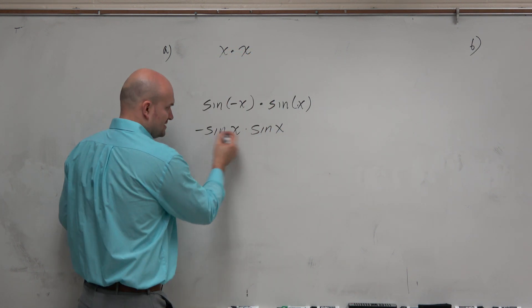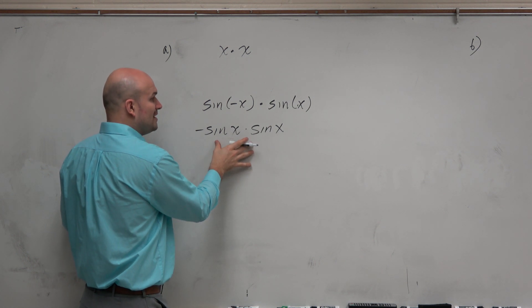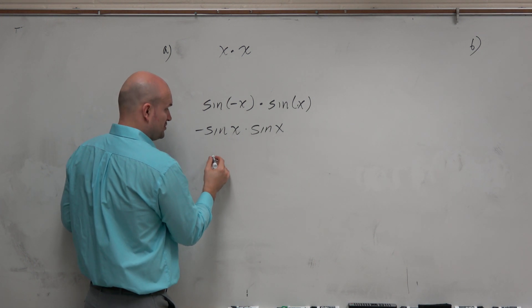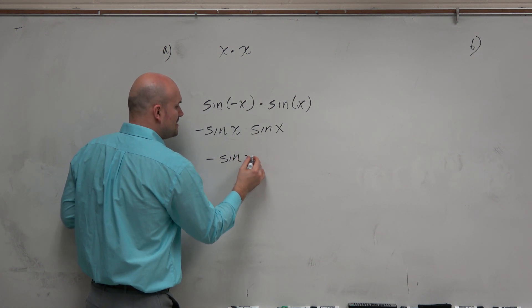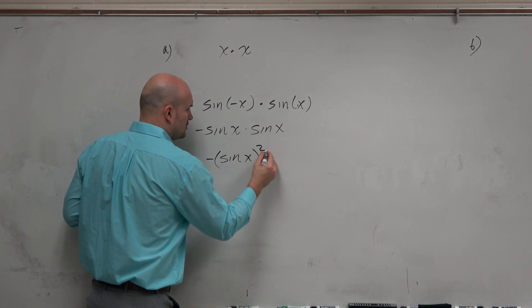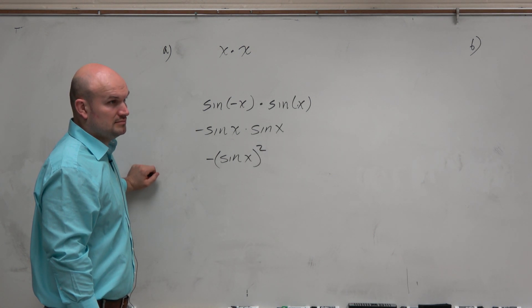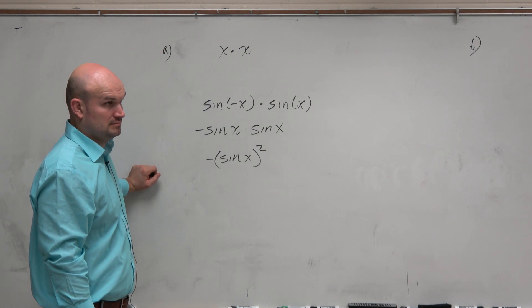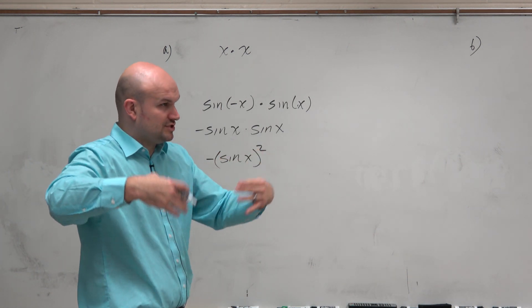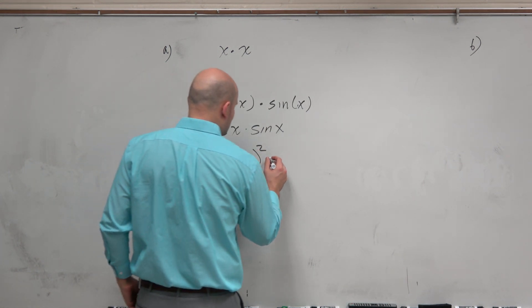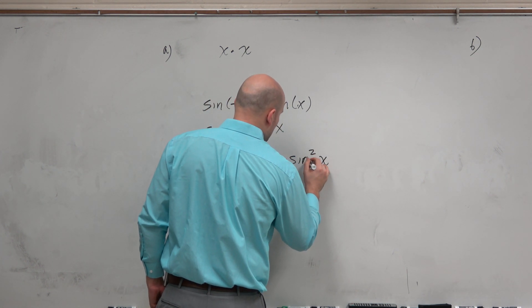The correct way to write this is a negative times a negative. You have a negative times a negative, which is going to be a negative, but then it's the function times x squared. Now, a better way: notice that it's the function times a function, which is squared. Another way to write that would be negative sine squared of x.